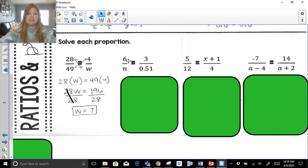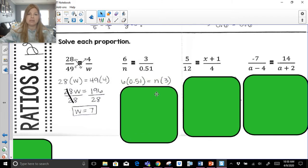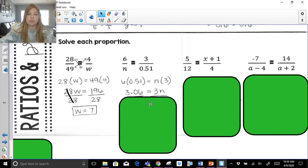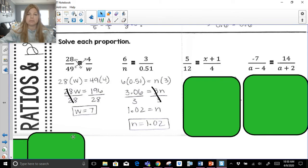Next one, same idea. 6 times this 0.51, n times 3. So 6 times 0.51 equals n times 3. So this becomes 3.06 equals 3n. Divide both sides by 3. And n equals 1.02.